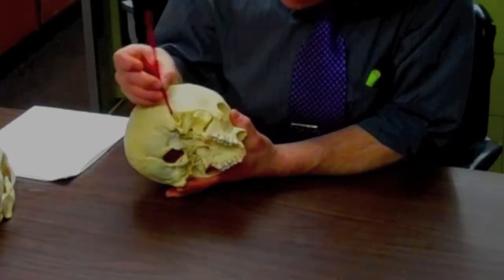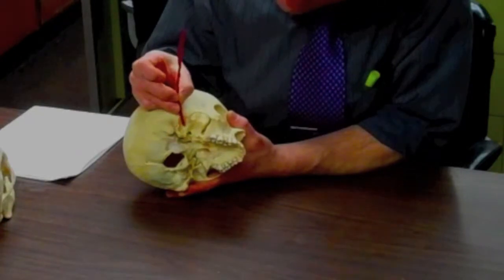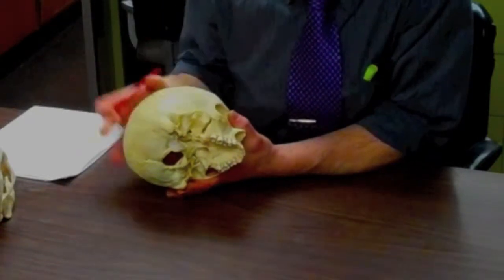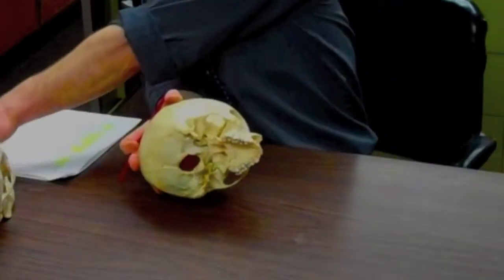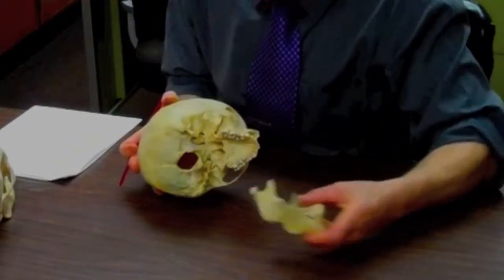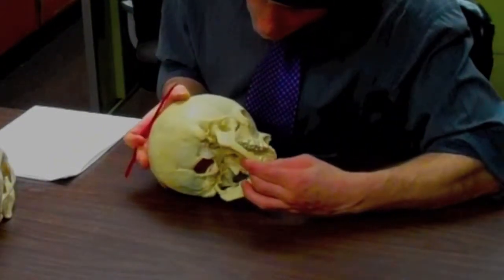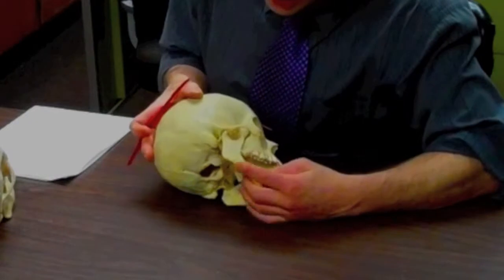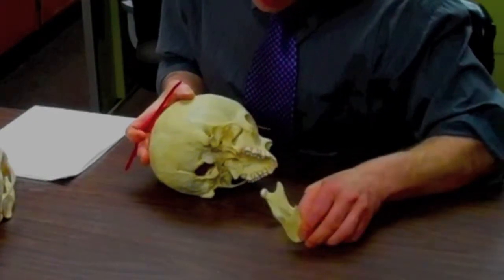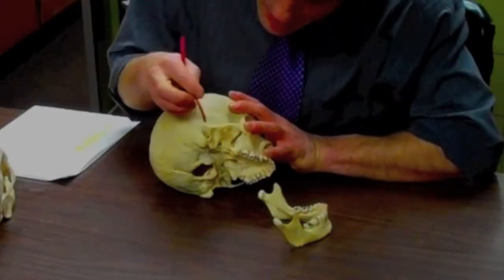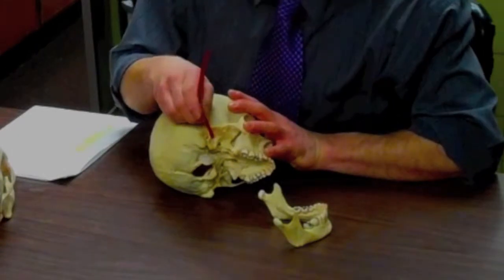We go a little bit anterior to the ear canal, we have a shallow sort of fossa and what happens in that fossa is we get the mandible to come in and make a joint right here. And so that fossa in here is known as the mandibular fossa of the temporal bone.